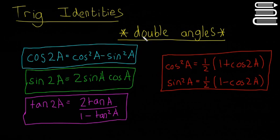In this video we're going to look quickly at the formulas for double angles and trigonometric identities. I'm going to give you two formulas that aren't in the formula book as well. First we'll just look at the ones that are in the formula book.